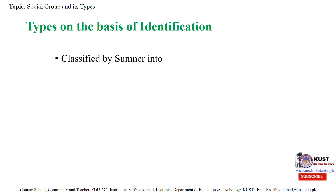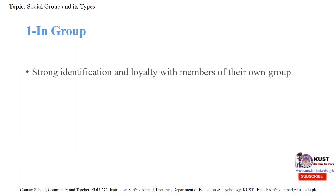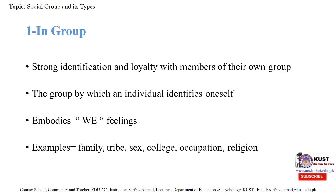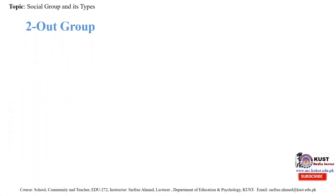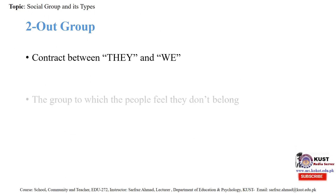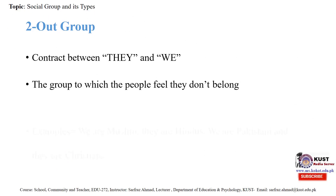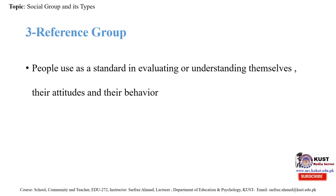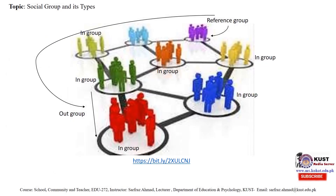Types on the basis of identification are classified into in-group, out-group, and reference group. In-group means having strong identification and loyalty with members of one's own group — the group by which an individual identifies themselves, embracing a 'we-feeling.' Examples are family, tribe, sex, college, and occupation. Out-group means those with whom there is contrast between 'they' and 'we' — the group to which people feel they don't belong; for example, 'we are Muslims, they are Hindus, we are Pakistani.' Reference group is the group people use as a standard in evaluating or understanding themselves, their attitudes and issues.